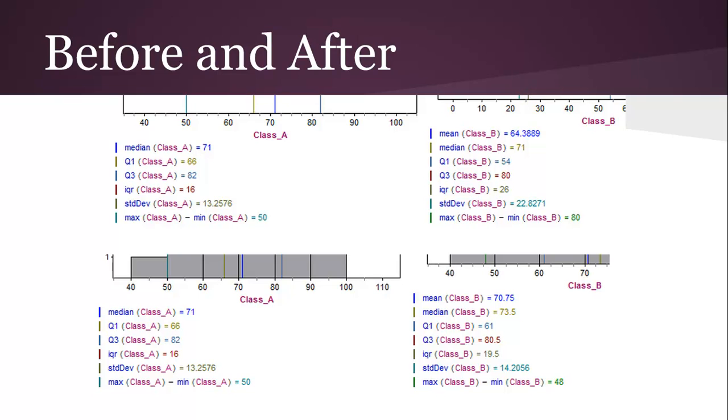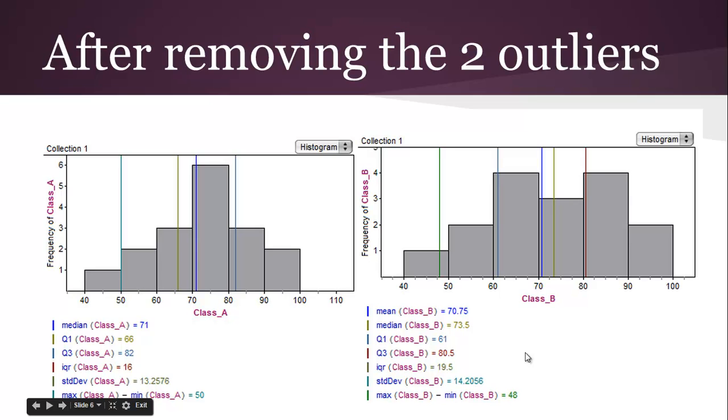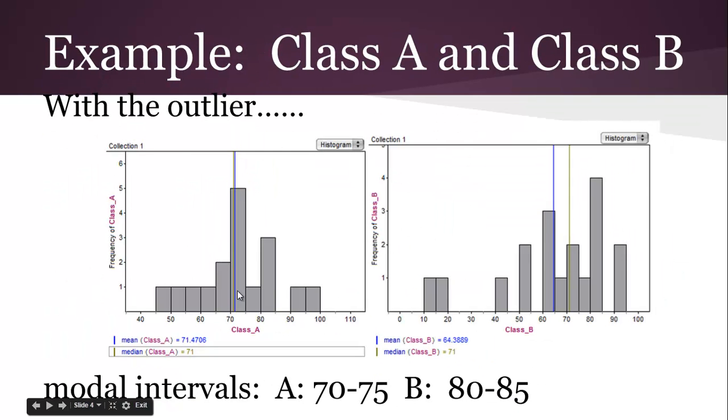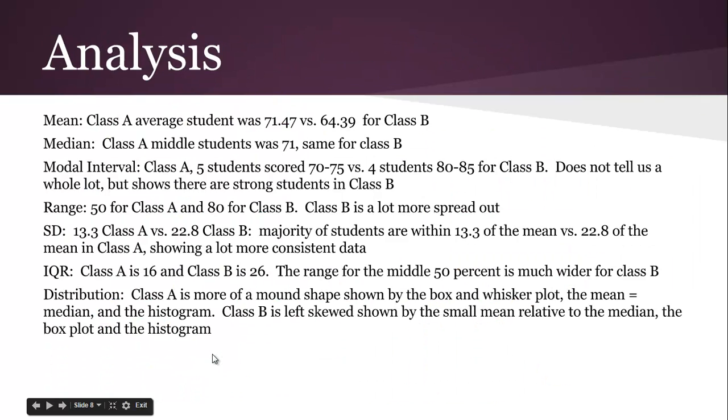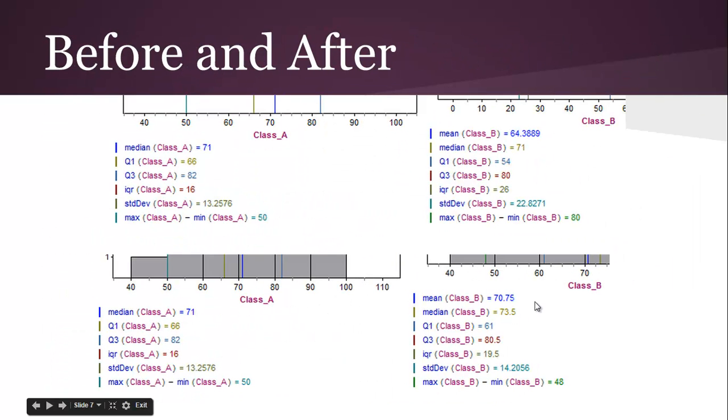Before and after, to get the picture, the median, these are the numbers for class A, and then these are the numbers for class B. You can see that the average has gone drastically up from 64 to 70.75. I didn't put that on here, but remember that the average for class A was 71.47. So your average is actually closer to 71 for class B now. The outlier had a big effect.